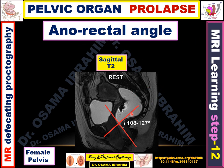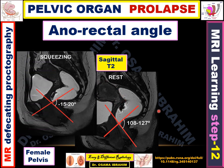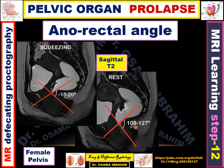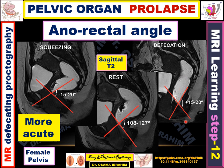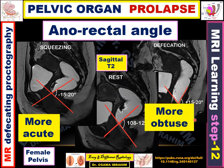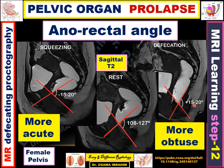What is the anorectal angle? The anorectal angle is the angle between the long axis of the anus and the long axis of the rectum. On this sagittal T2-weighted image, fluids appear as a bright signal — such as the fluid in the urinary bladder or in the rectum. In this female pelvis, this angle should be more than 100 degrees at rest. During squeezing, it decreases by about 15 to 20 degrees, becoming more acute. During defecation, due to evacuation of rectal content, it becomes more obtuse, increasing about 15 to 20 degrees from the rest measurement.